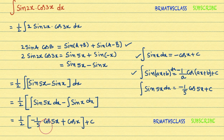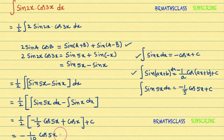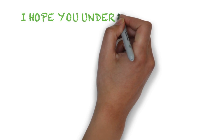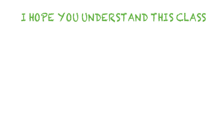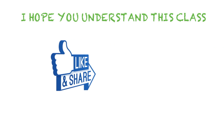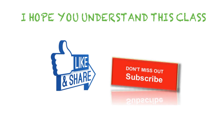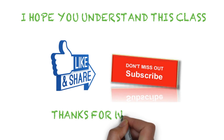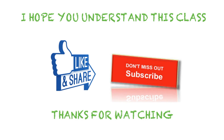Writing one more simplification step: one-half times one-fifth equals one-tenth, giving us minus one-tenth cos 5x plus one-half cos x plus c. I hope you understand this class. If you like this video, please share it with your friends. If you are not yet subscribed to my YouTube channel, subscribe now. Thanks for watching. Have a great day. Bye-bye.